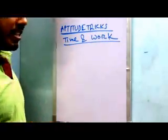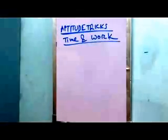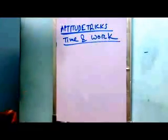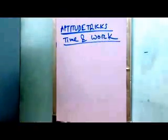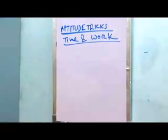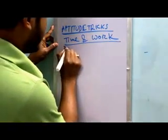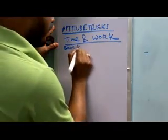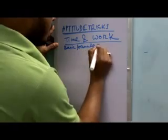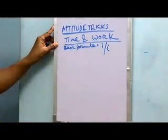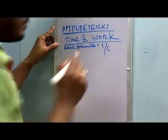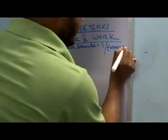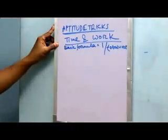So let's jump to the tricks. The basic formula of time and work: the basic formula equals 1 by total amount of work. So 1 divided by total work is the basic formula.